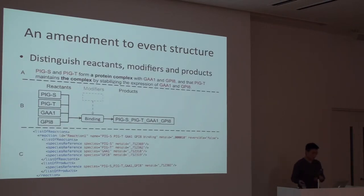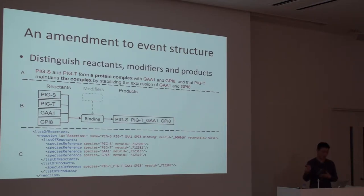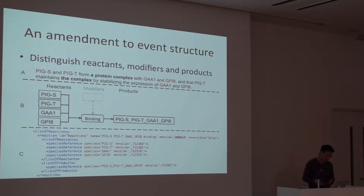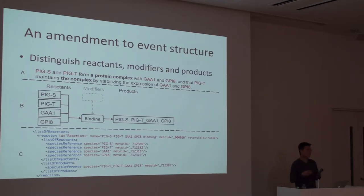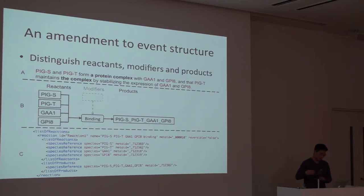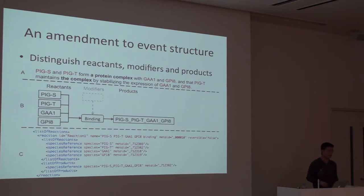What we are doing now is annotating reactions in BioNLP corpora with the distinguished reactants, modifiers, and products. For example, in the sentence 'PIGS and PIGT form a protein complex with GAA1 and GPIS,' there are two events: besides the upstream binding event, there is also a gene expression event downstream. We are annotating the reactions in compliance with this structure, and we plan to experiment with discourse analysis and coreference technologies to link interconnected events.